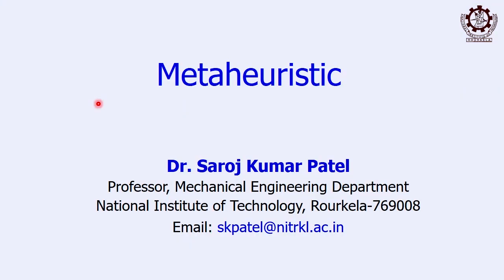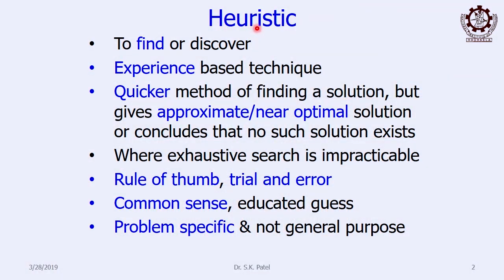Henceforth, whatever we will discuss will be non-traditional methods. All the non-traditional methods of optimization are also called meta-heuristics. Let us see what meta-heuristics is. Heuristics — have you heard of the term heuristics? Usually, heuristics means it is a thumb-rule type where it provides you a solution for a given particular situation, a given particular problem.